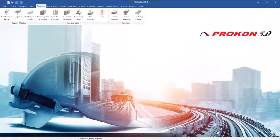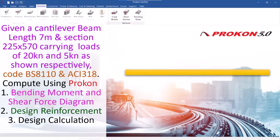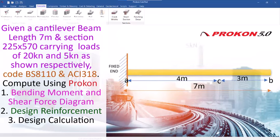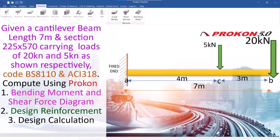In this video we are going to consider manual principles using Procon to carry out the design of a reinforced concrete cantilever beam using the BS code and ACI code. We will compute the bending moment, design reinforcement, and produce manual design calculations.